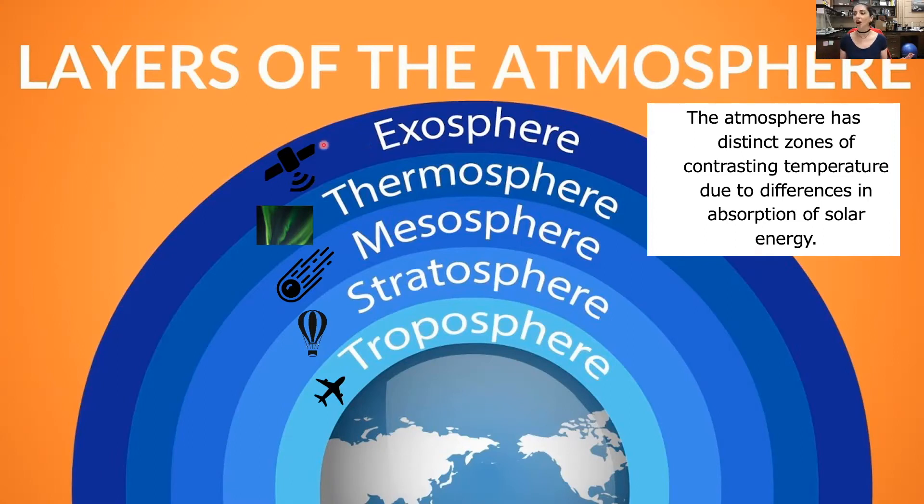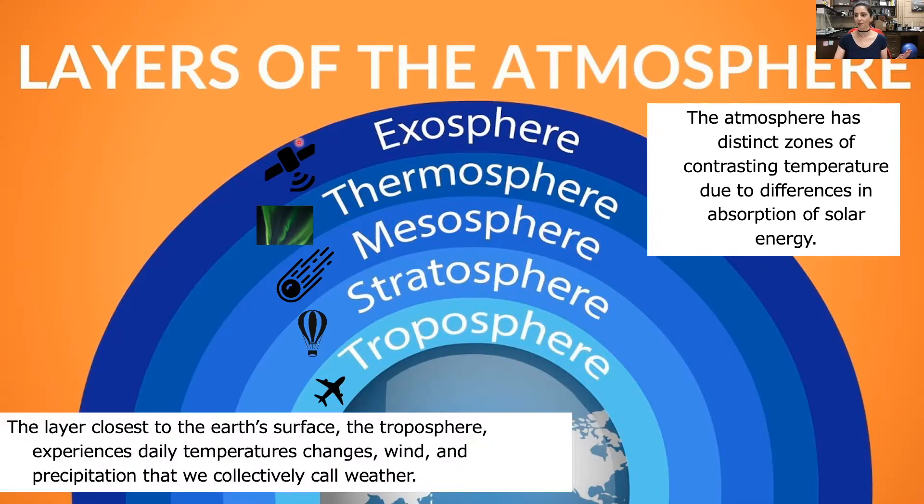The layer that's closest to the Earth's surface, the troposphere, this is where we have our daily temperature changes. This is where wind is happening, and this is where precipitation is falling from. All of these things combined is what we call weather.